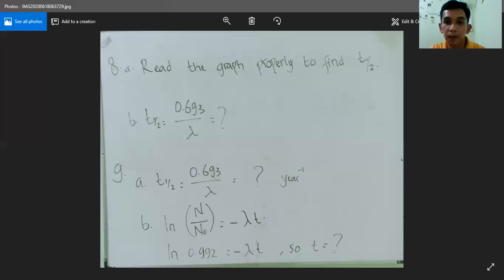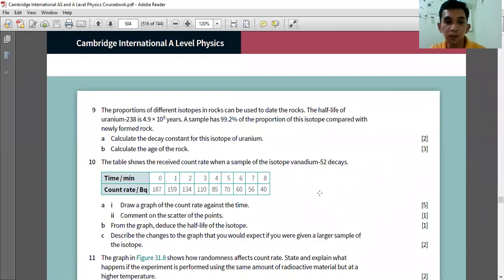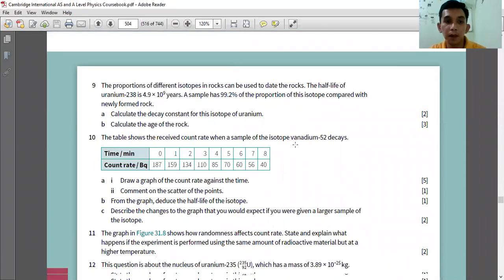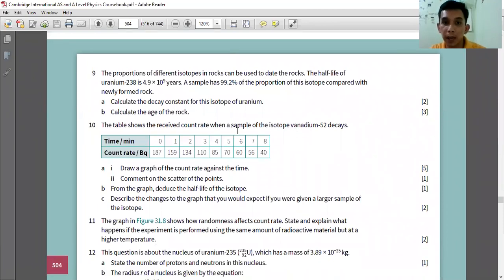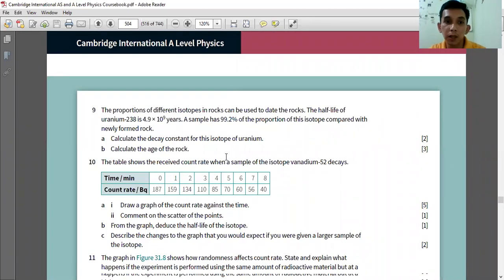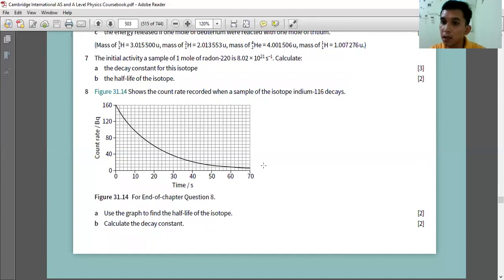And next, number 10. The table shows the received count rate when a sample of the isotope vanadium-52 decays. So you read this table and then you need to convert it into a graph. Draw a graph of the count rate against the time.